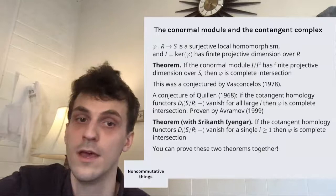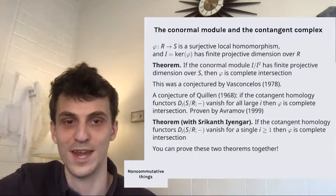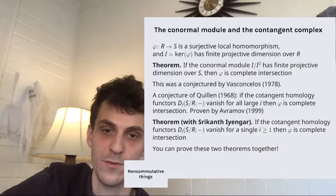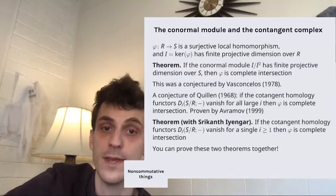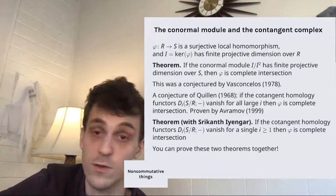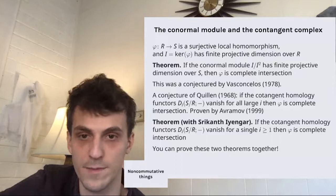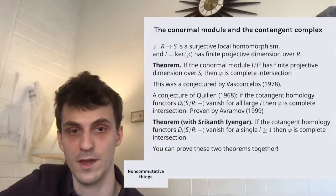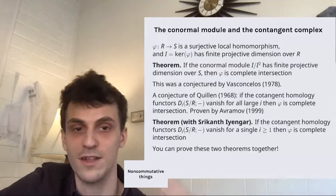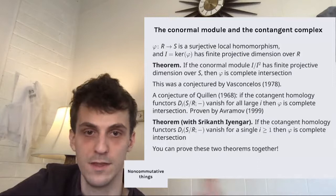Going back to a conjecture of Quillen from 1968: if the cotangent homology groups d_i vanish for large i — so from the cotangent complex you get this cotangent homology theory — Quillen conjectured that if these vanish for large i, then you have a complete intersection homomorphism. This is true; it was proven by Avramov in 1999 using the homotopy Lie algebra, and the proof is quite involved. We have what I think is a more conceptual proof, and also a stronger statement: we proved that if the cotangent homology d_i vanishes for even a single i ≥ 1, then you have a complete intersection homomorphism. It's a rigidity statement, slightly upgrading Quillen's conjecture.